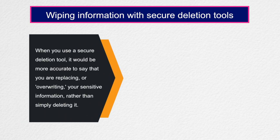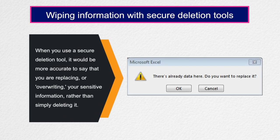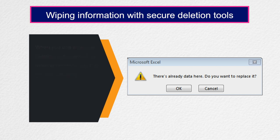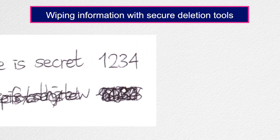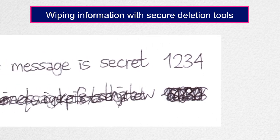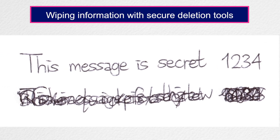Wiping information with secure deletion tools. When you use a secure deletion tool, it would be more accurate to say that you are replacing or overwriting your sensitive information rather than simply deleting it. If you imagine that the documents stored in those hypothetical filing cabinets are written in pencil, then secure deletion software not only erases the contents but scribbles over the top of every word.